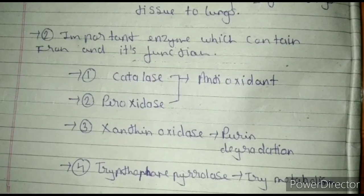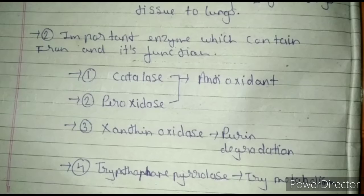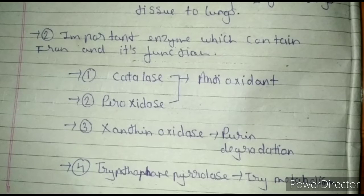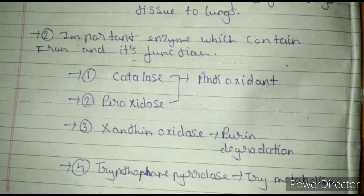The enzymes that contain iron in their chemical structure include catalase, peroxidase, and tryptophan pyrolase. Catalase and peroxidase act as antioxidants — they have antioxidant properties and can neutralize free radicals generated in our body, which can otherwise cause cancer.